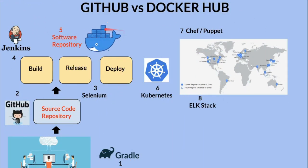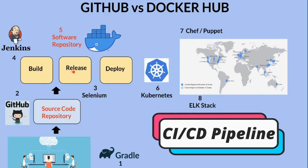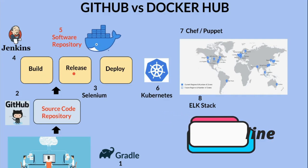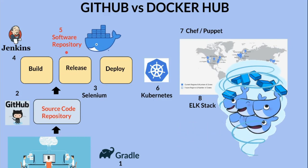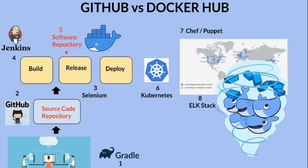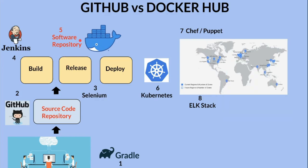I'd like to explain where GitHub and Docker Hub fit in our software development. Say for example I am a software developer working in a team. I develop a feature using a programming language. Once the feature is completed I push my code to GitHub, which is a source code repository. Once the code is available in GitHub it will be pulled by the CI/CD pipeline. The code will be compiled with its dependencies and a Docker image will be built. Once the image is ready it will be pushed to Docker Hub, which is a software repository or image repository.